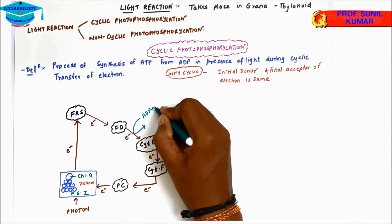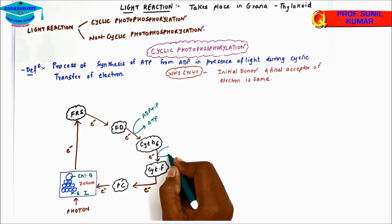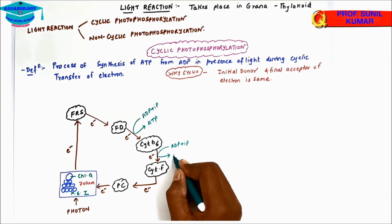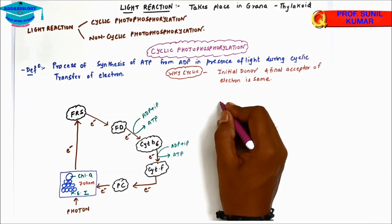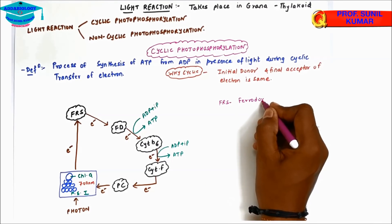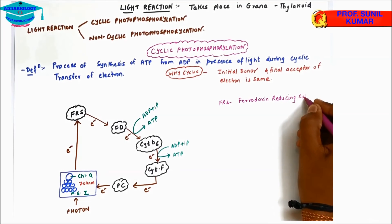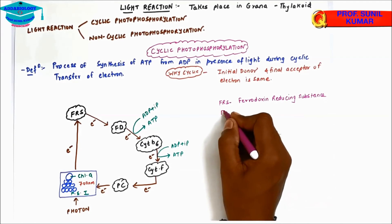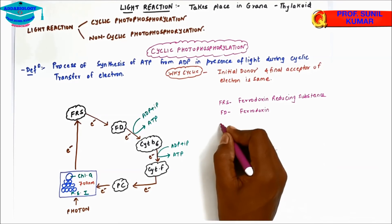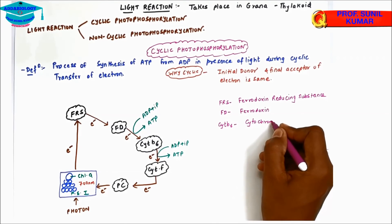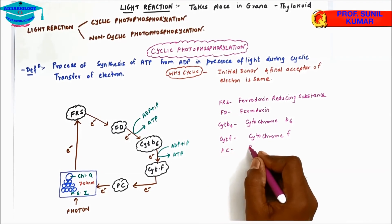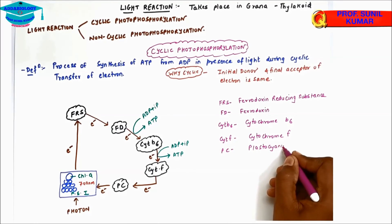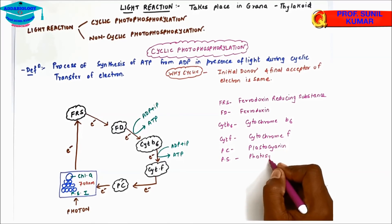ATP is synthesized at two points: between Fd and cytochrome b6, where ADP + Pi gives ATP, and between cytochrome b6 and cytochrome f. This is called photophosphorylation because ATP is synthesized in the presence of light. The full forms are: FRs = ferredoxin reducing substance, Fd = ferredoxin, Cyt b6 = cytochrome b6, Cyt f = cytochrome f, PC = plastocyanin, PS1 = photosystem one.